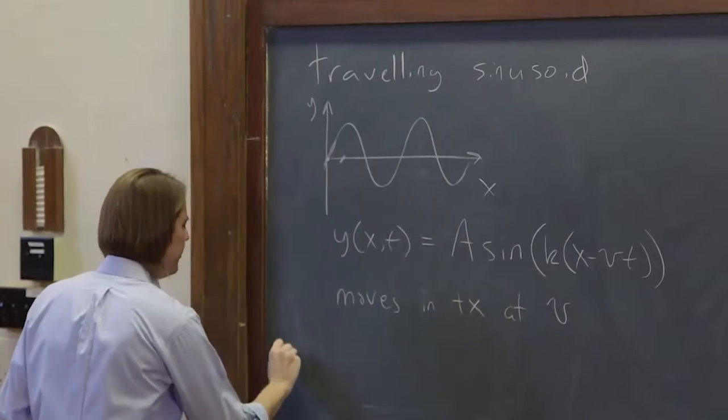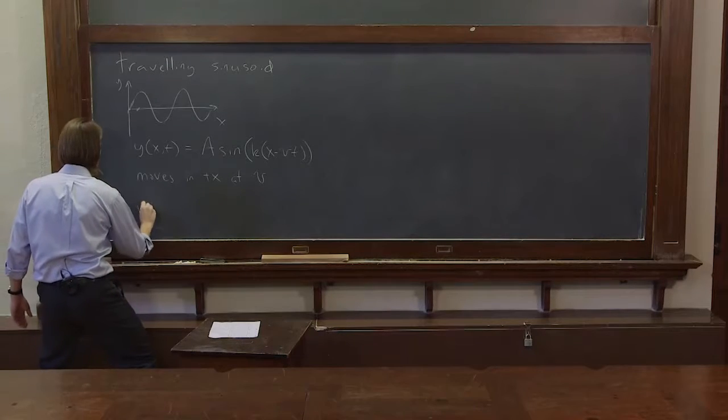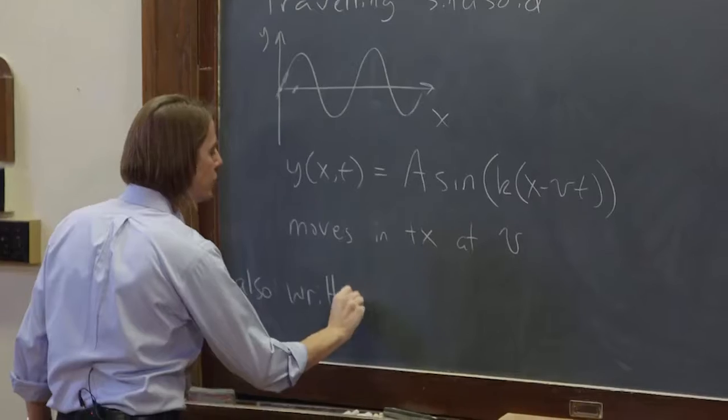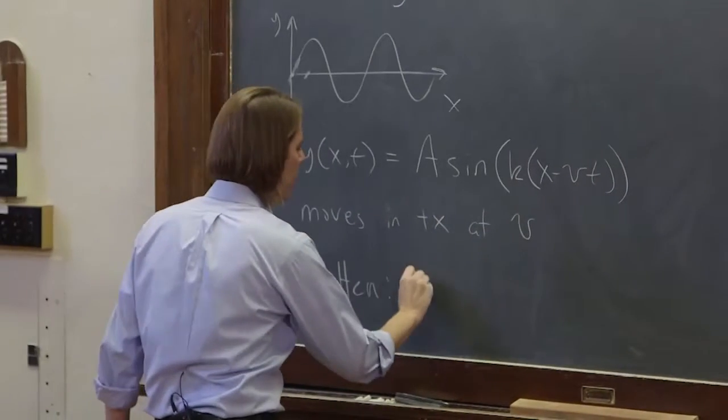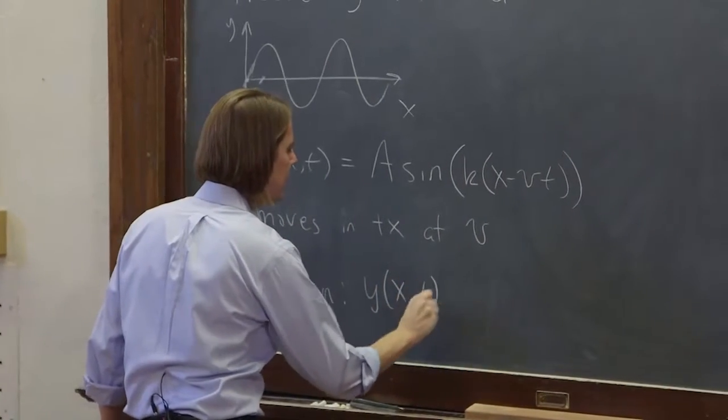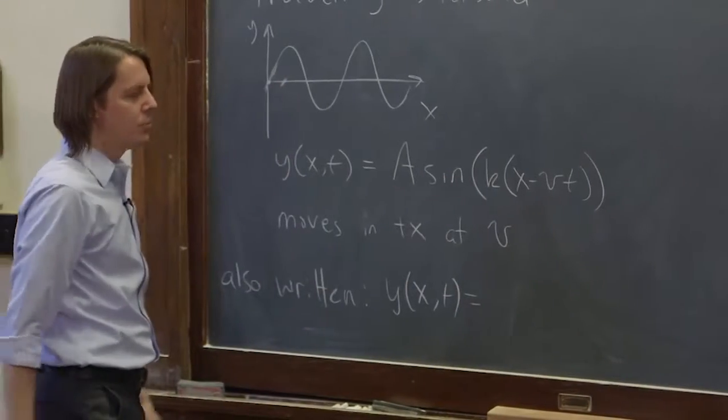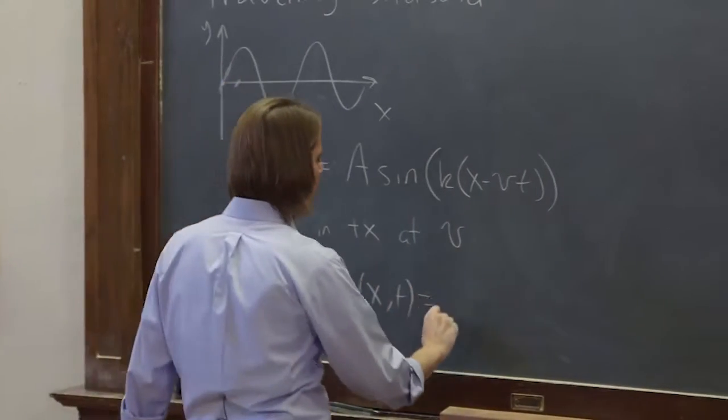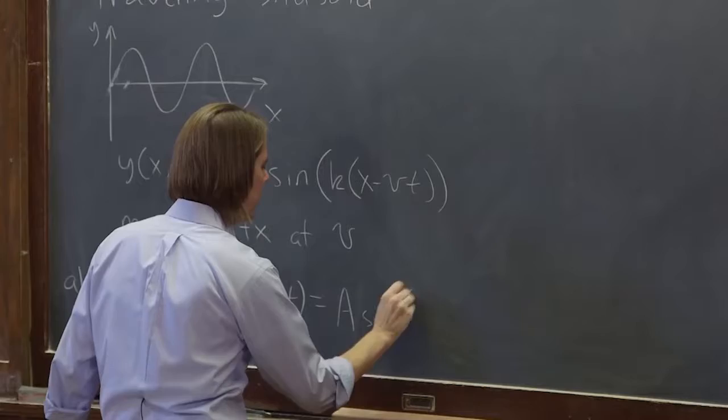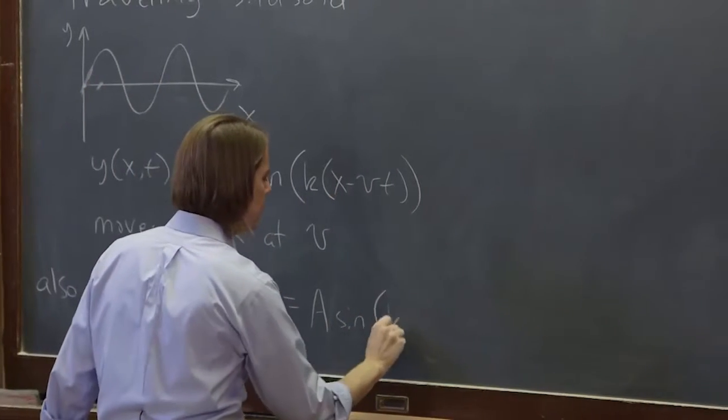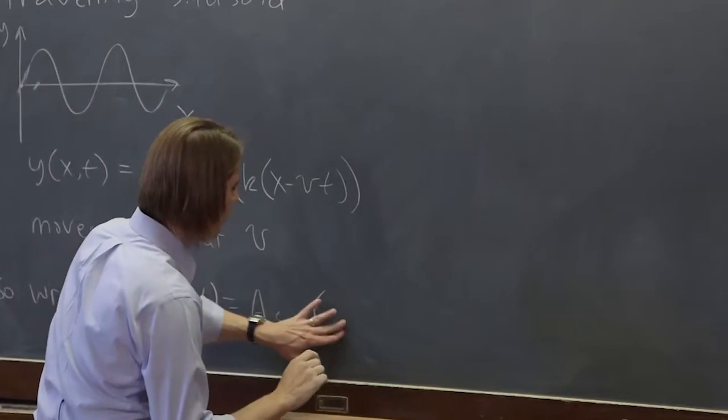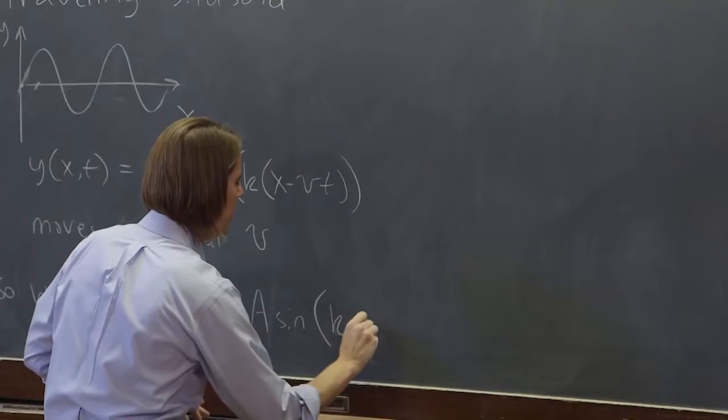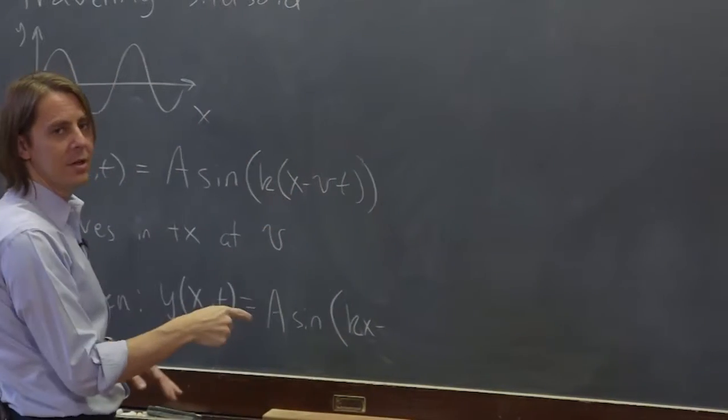For sinusoids, it's also written like this. Usually written like this, y of x and t. And you basically just distribute the k. It equals a sine and then kx minus, and then kv is omega.